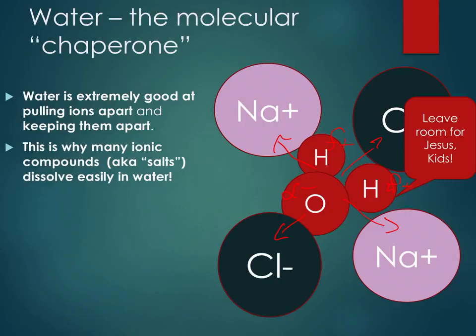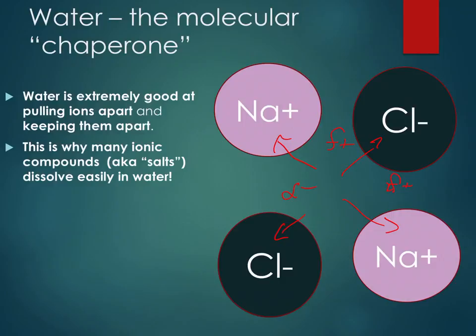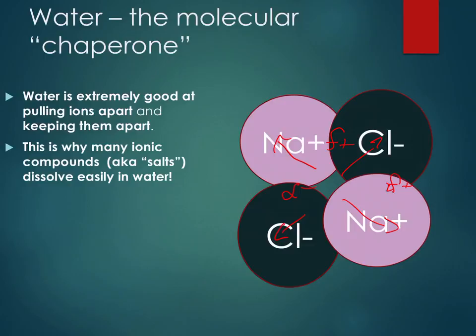This is why many ionic compounds dissolve easily into water — because of those charges and the partial charges on the oxygen. Now if water is removed, say you have a glass of water and leave it out for a week, the water disappears and you'll notice a crystal film forms. That's the salt crystal reforming at the bottom of your glass.